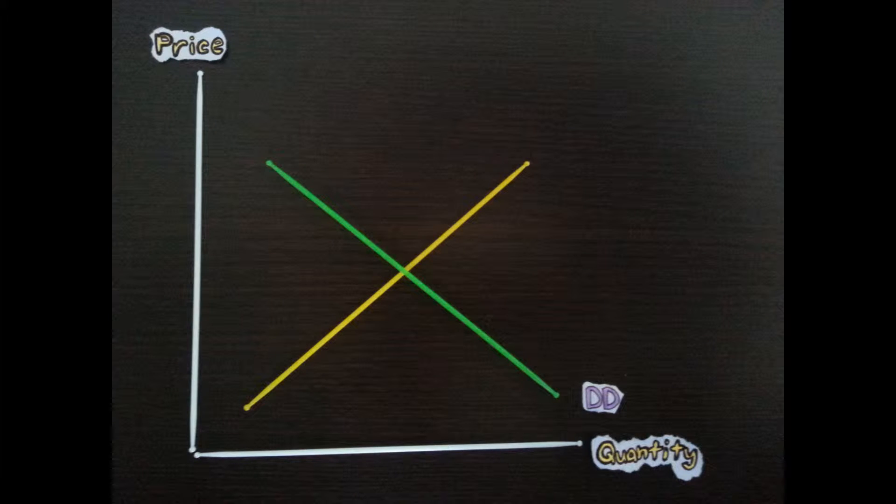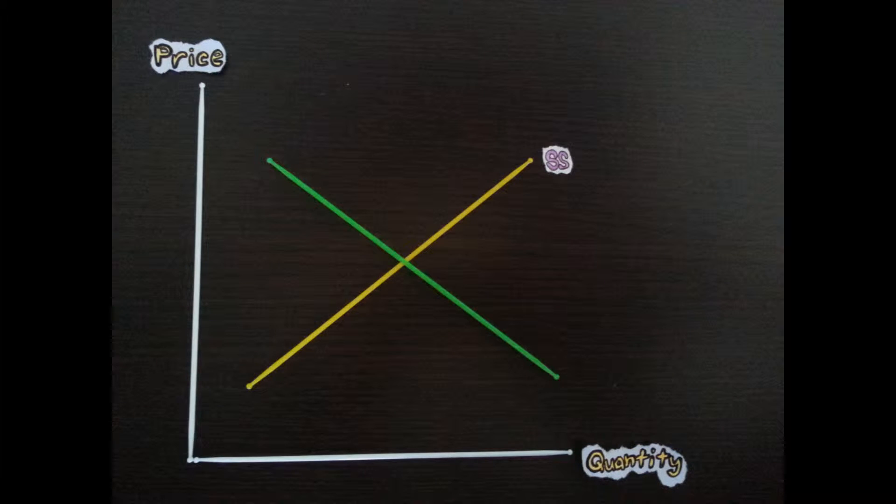The curve sloping downwards is the demand curve, which is known as the DD curve, whereas the upward sloping curve is the supply curve, which is known as the SS curve.